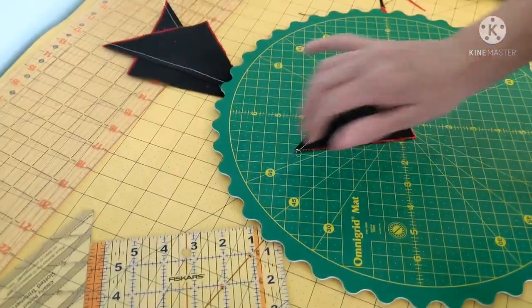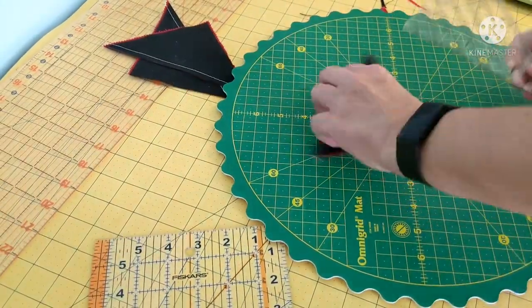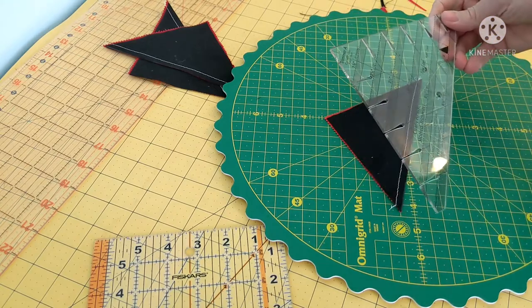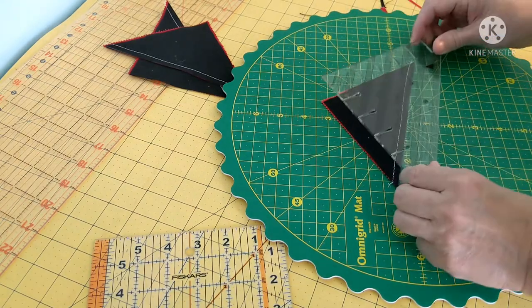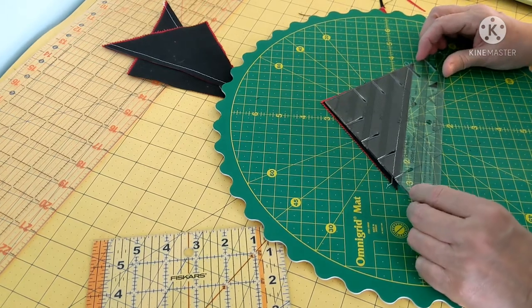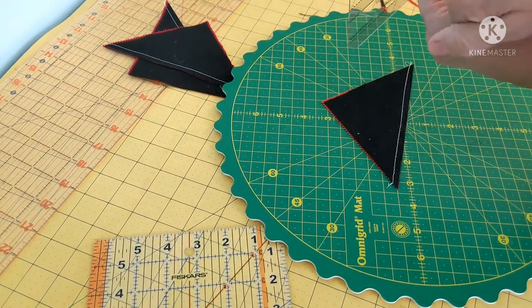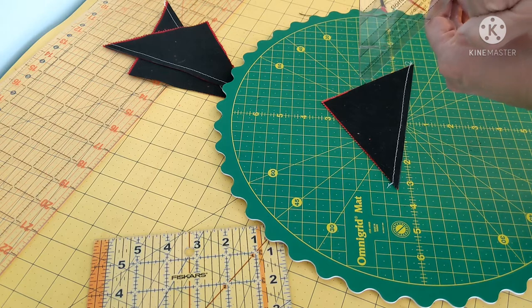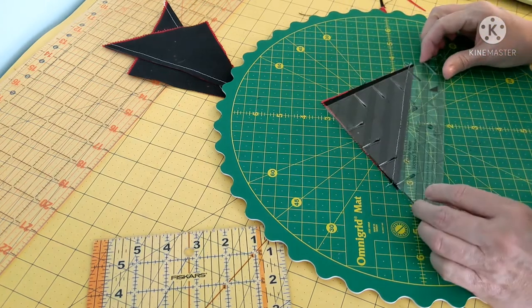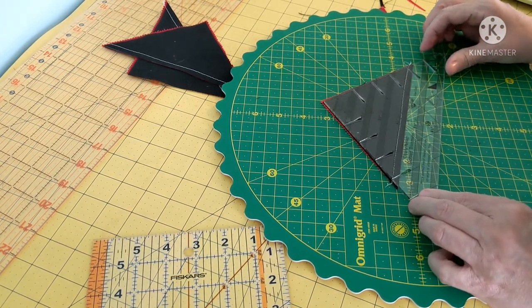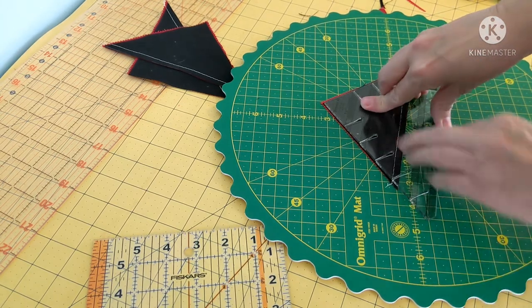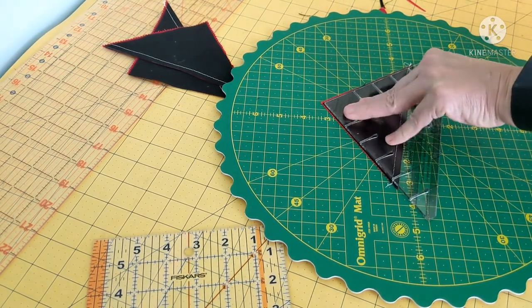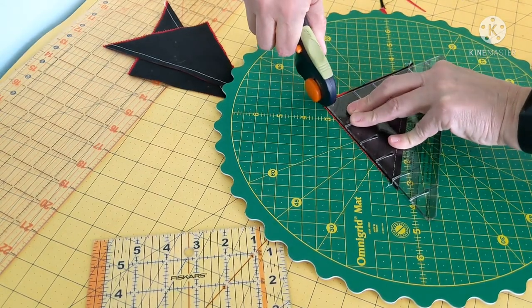The other way that you can trim these is to take this slotted trimmer and you line up your seam line on their dotted line. So we want the four and a half. And then you just have to trim the two sides.